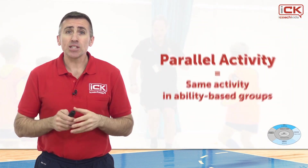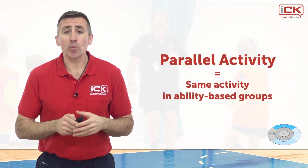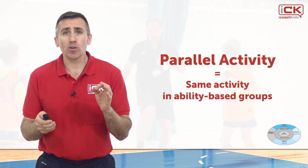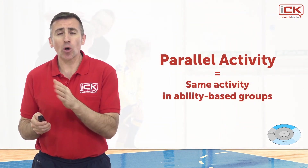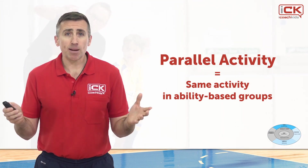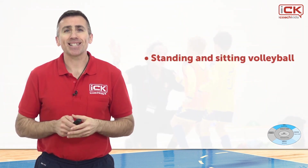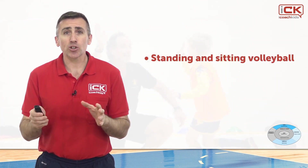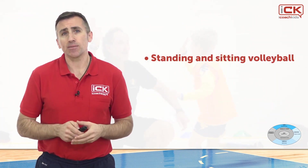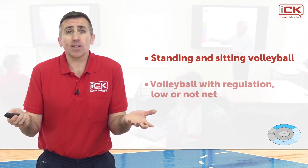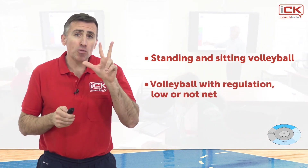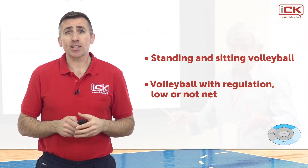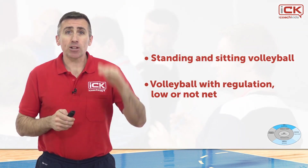In parallel activity, although participants follow a common activity theme, they do so at their own pace and level by working in groups based on their abilities. For example, two groups can play a seated and standing version of a game, and participants play the version most suited to their abilities. Or players in a volleyball game can be divided into three groups: playing with no barrier, playing with a low net, or playing with a net at regulation height.